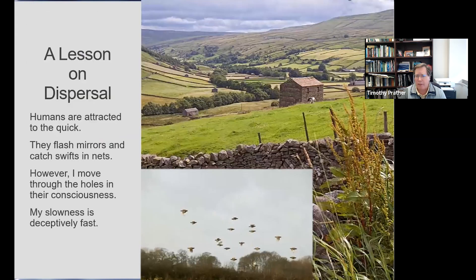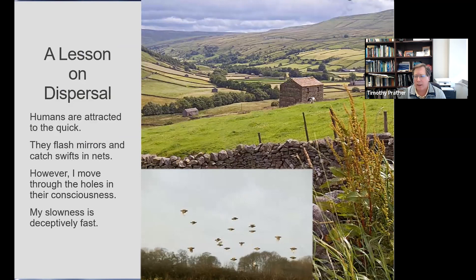The other thing is that Timothy makes the observation that humans are attracted to the quick. He uses the example of people who flash mirrors to startle birds called Swiss, and the Swiss land in nets and are taken to market. So humans are attracted to the quick and they flash mirrors and catch Swiss in nets. Timothy says, 'However, I move through the holes in their consciousness. My slowness is deceptively fast.'